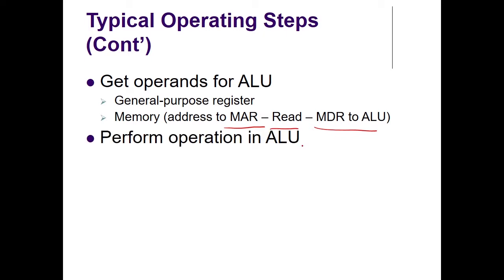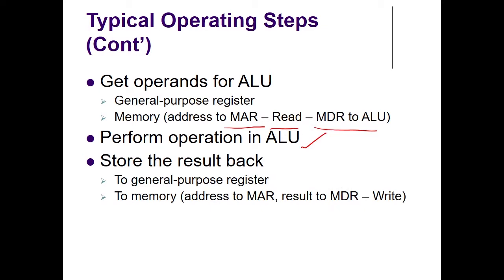The ALU performs the corresponding add or subtraction operation. Once the result — say A plus B — is obtained, it needs to be stored. The result will be stored in a register or in memory. If we know the memory address, we again use the MAR to store the result, and the result goes from the ALU through MDR to the memory. This is the typical set of operating steps, and I will be repeating these steps in a few more classes.